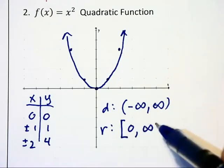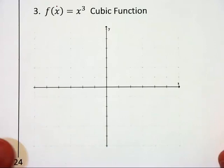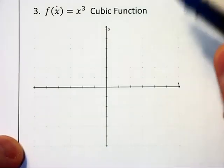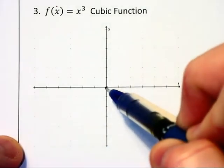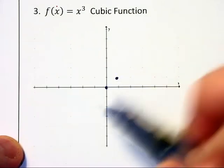The cubic function also known as y equals x cubed. 0 cubed is 0, 1 cubed is 1, negative 1 cubed is negative 1.